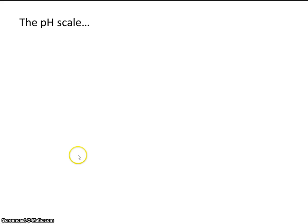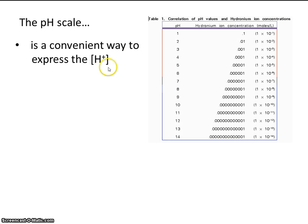So keeping that in mind, the pH scale is a convenient way to express the concentration of hydrogen ion. So let's take a look. Here's pH going from 0 to 14. So this would be acidic, this would be basic, and look what happens to the concentration of hydrogen ion.